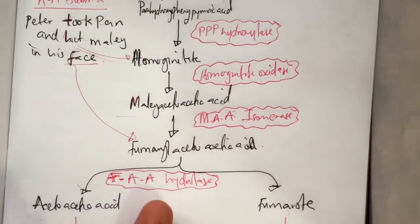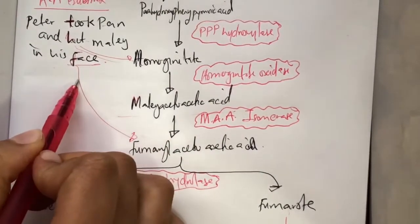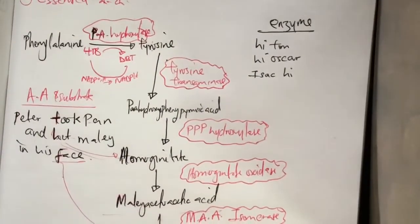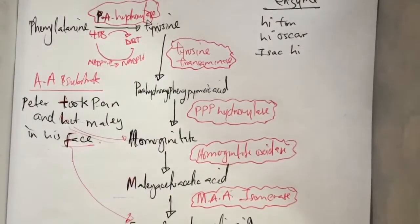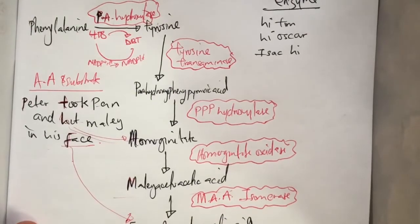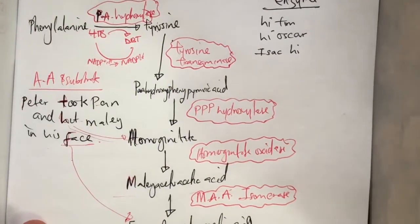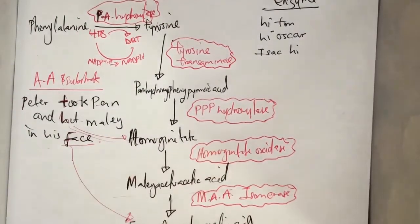So if you can remember, the products are acetoacetate and fumarate. I don't know where to put it here, so I hope this is useful. The next thing we're going to talk about is the deficiency of some of the enzymes.